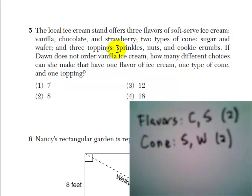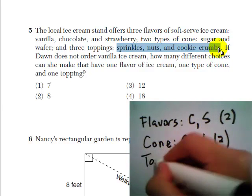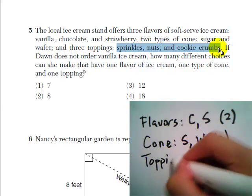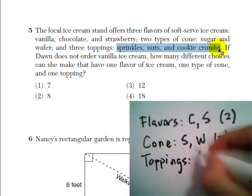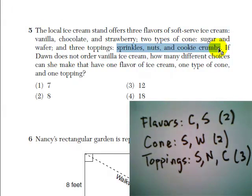And then for toppings, we have sprinkles, nuts, and cookie crumbs. And that gives us three.